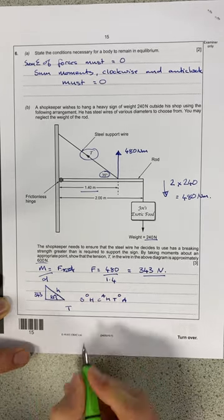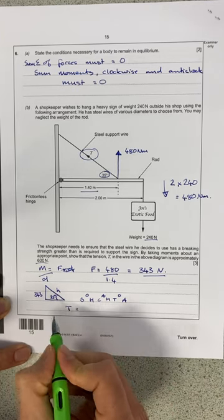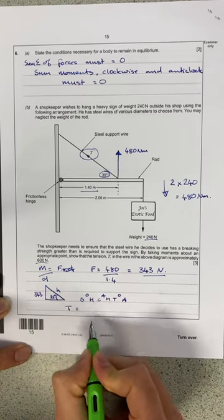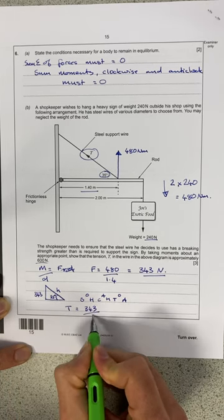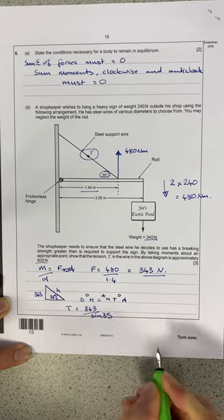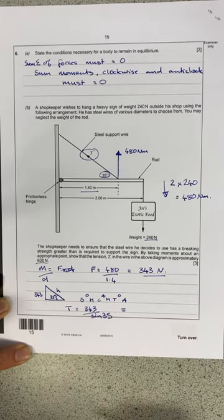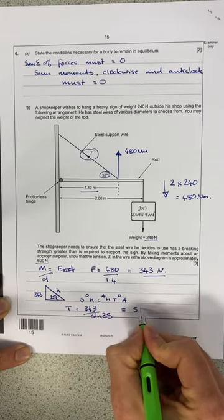So the tension, the hypotenuse, is equal to the opposite, 343, divided by sine 35. That's my angle component. And that, running out of space here, is going to give me 598.